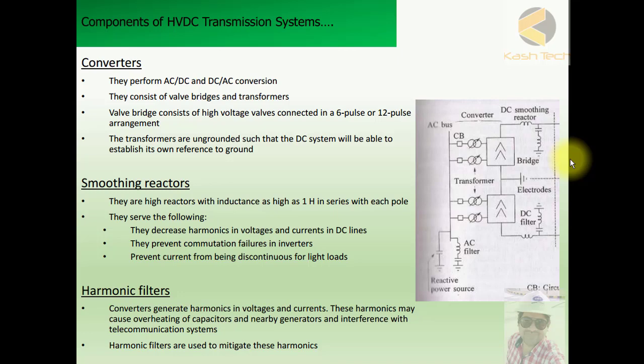Converters consist of valve bridges and transformers. The valve bridge consists of high voltage valves connected in 6-pulse and 12-pulse arrangements — these are the thyristor gates and valves used for conversion. The transformers are ungrounded so that the DC system is able to establish its own reference to ground.